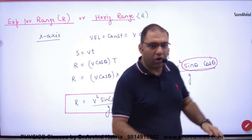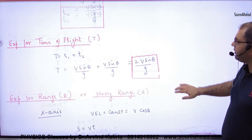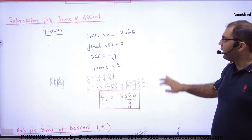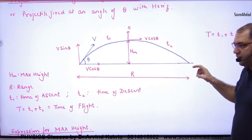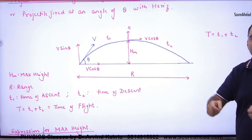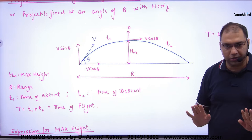Expression for range or horizontal range covered by the projectile. For example, if your body goes here from here, then in this case, the ground distance - what do you call it? Horizontal range or range, clear?